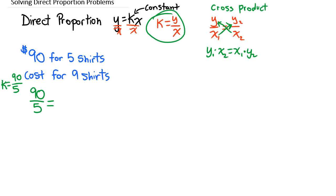So we see that 90 divided by 5 equals, so if we have cost here and shirts here, then what we can say is we want to find the cost, so we can just use c, divided by the number of shirts.